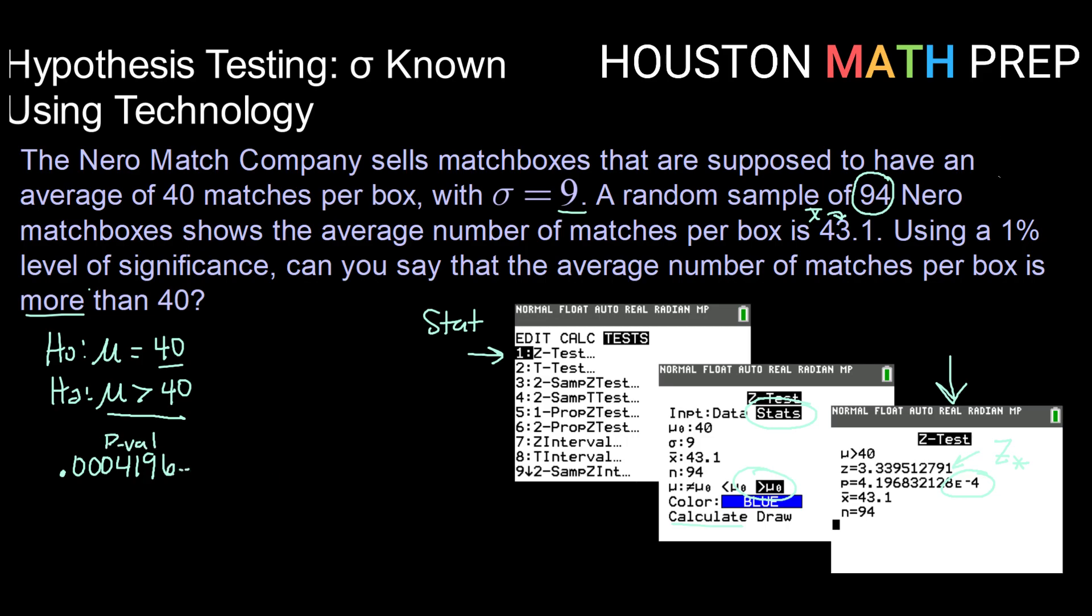And we want to compare that to our level of significance. So our level of significance, or 1%, is 0.01. So here, our p-value is less than our level of significance, our alpha value of 0.01. So when our p-value is low, our p-value is smaller than our alpha, that means it's very unlikely to get an average of 43.1 if the true average is 40. So that means we would reject this null hypothesis. So here we could say there is sufficient evidence to reject the claim that the true mean number of matches is equal to 40.